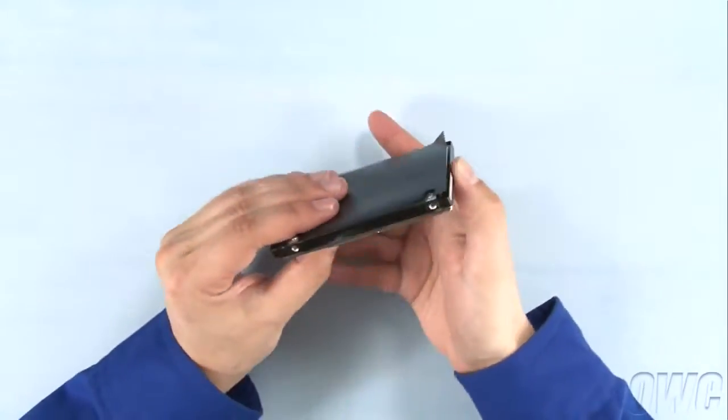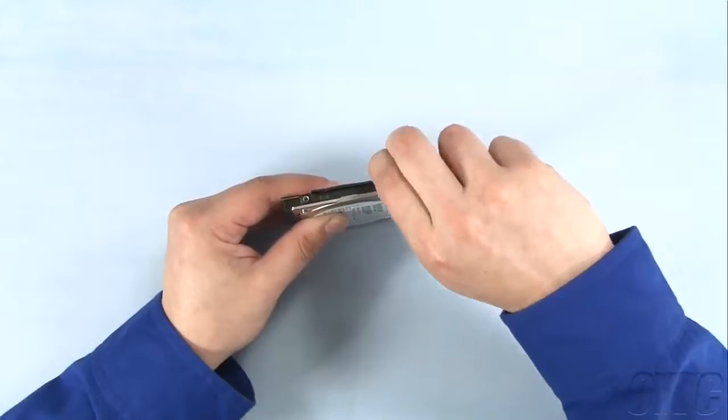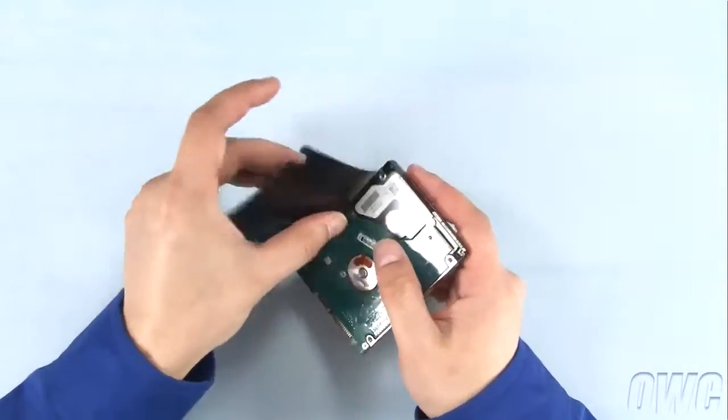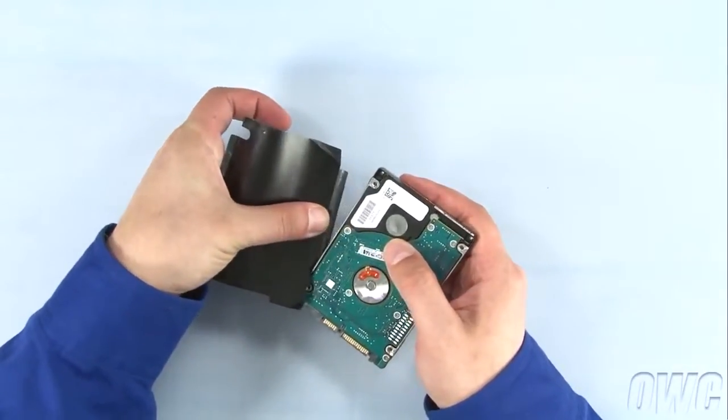If you're installing a standard hard drive, then you'll also want to gently peel off the black plastic cover on the old drive to put it on the new one, as it covers the exposed circuit board. If you're installing an SSD, you can skip this step, since there's no exposed circuitry to cover.